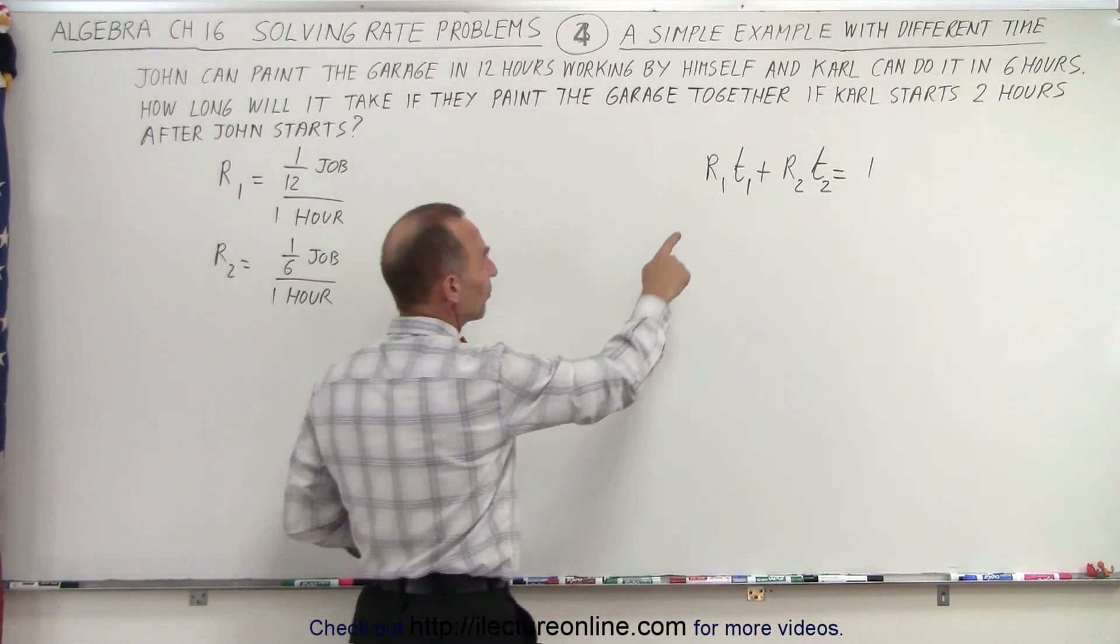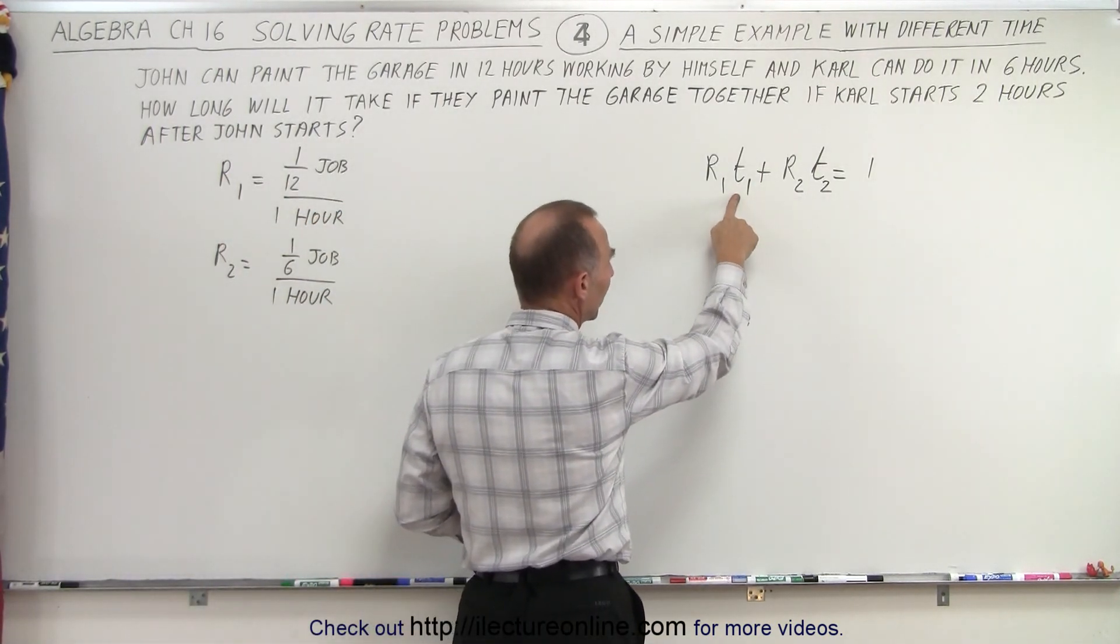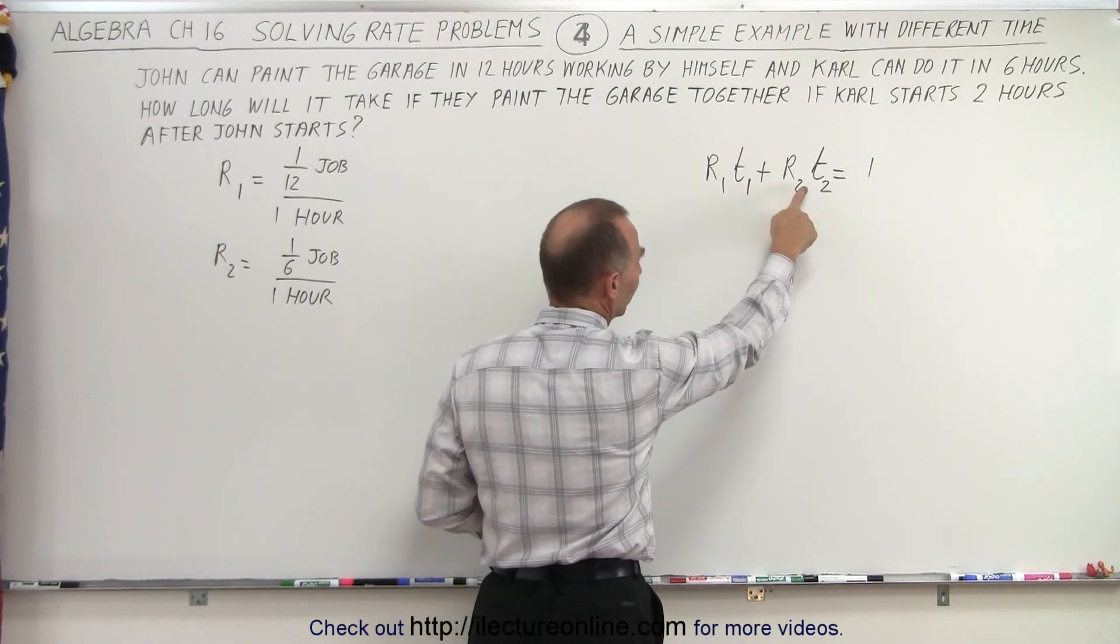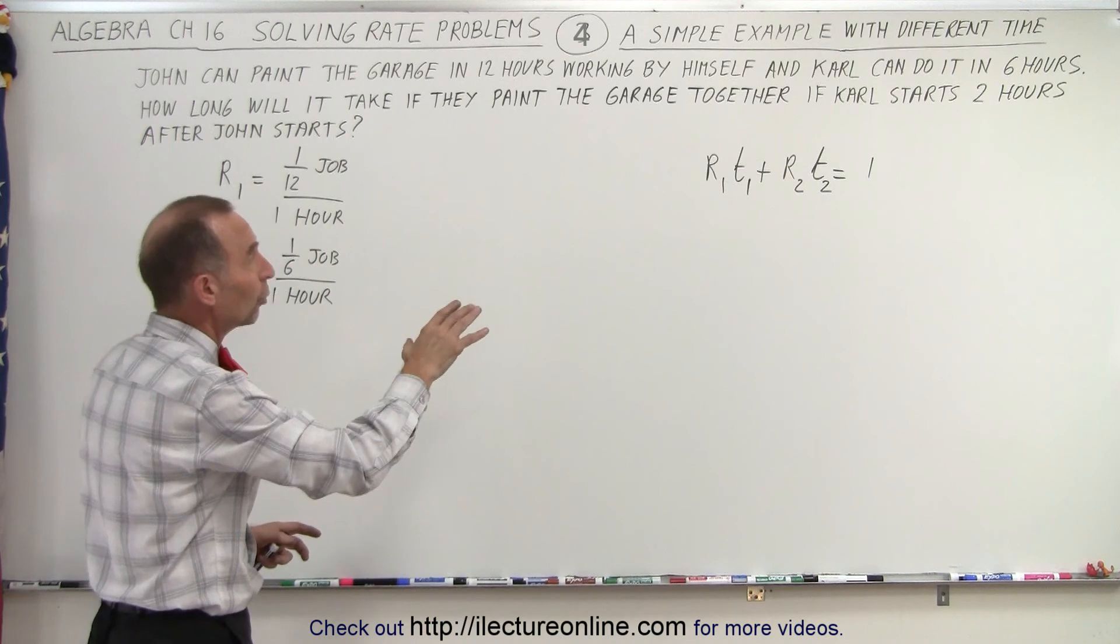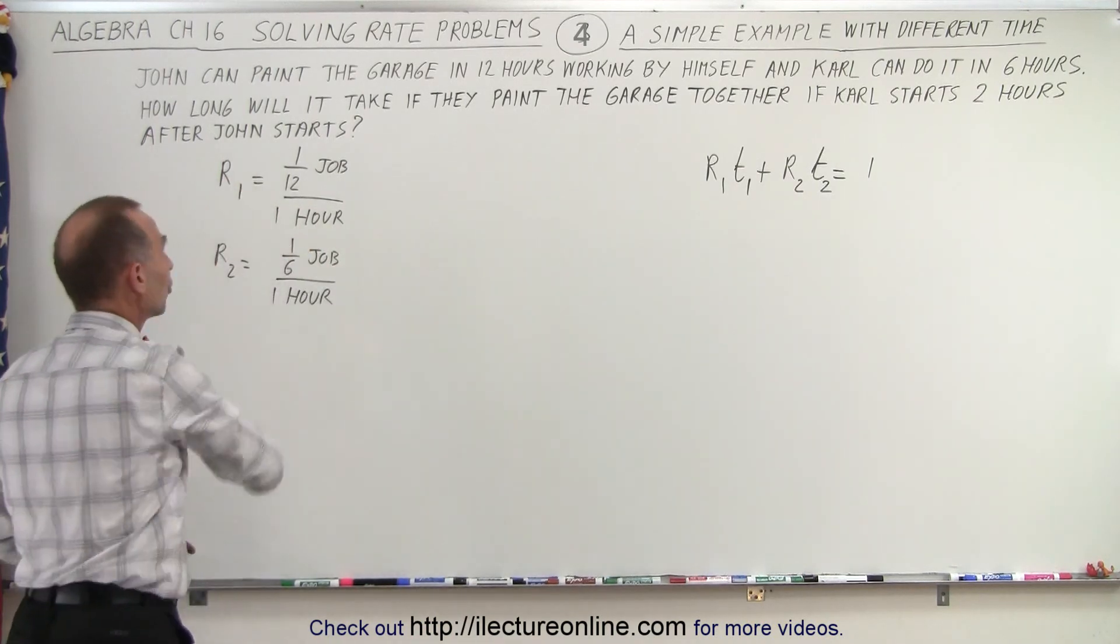The equation becomes: the rate of John times the time spent by John, plus the rate of Carl times the time spent by Carl, equals one. Notice the difference here is that Carl will start two hours after John starts.